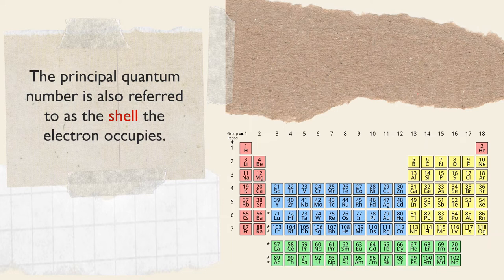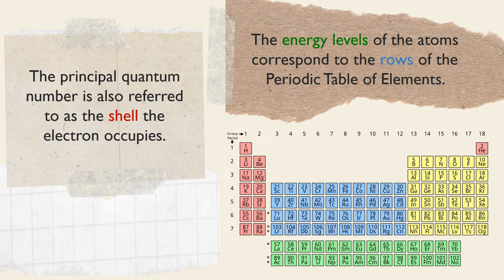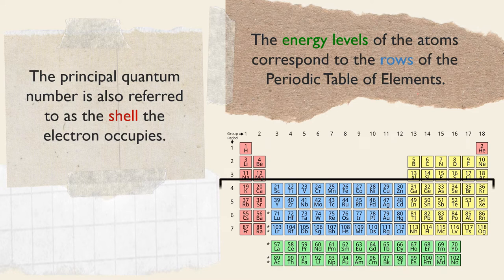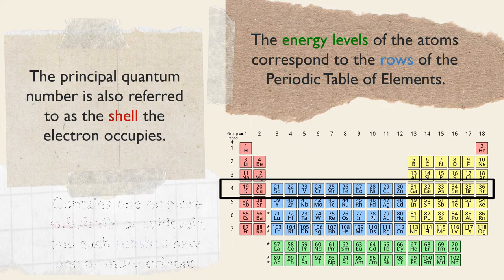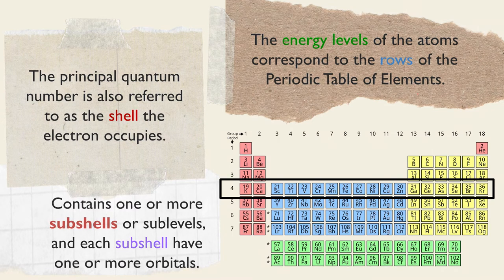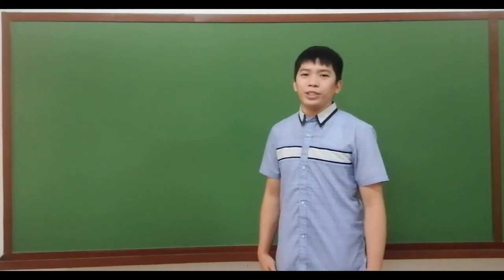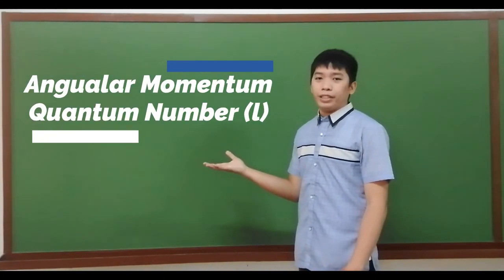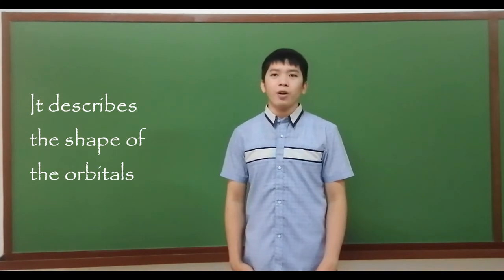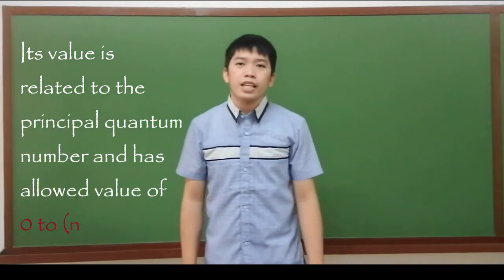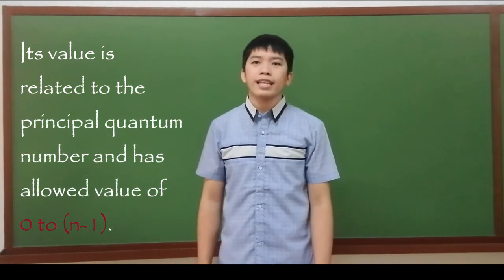The energy levels of the atoms correspond to the rows of the periodic table of elements, meaning to say, elements in the same row have the same energy level. For example, elements in row 4 of the periodic table of elements have 4 shells. Each shell contains one or more sub-shells or sub-levels, and each sub-shell have one or more orbitals. The next quantum number is the angular momentum quantum number designated as a small letter L. It describes the shape of the orbitals.